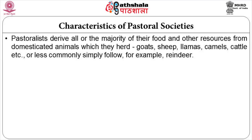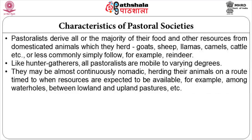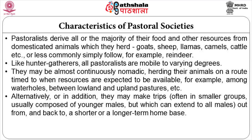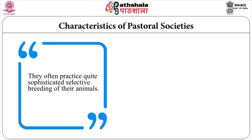Pastoralists live on their animals' milk, blood, meat, wool, hides and dung, which is useful for fuel. The animals may also provide transportation. Like hunter-gatherers, all pastoralists are mobile to varying degrees — they may be almost continuously nomadic, herding their animals on a route timed to when resources are expected to be available, for example among water holes or between lowland and upland pastures. Alternatively, they may make trips in smaller groups, usually composed of younger males, out from and back to a shorter or longer term home base. Pastoralists often practice quite sophisticated selective breeding of their animals.